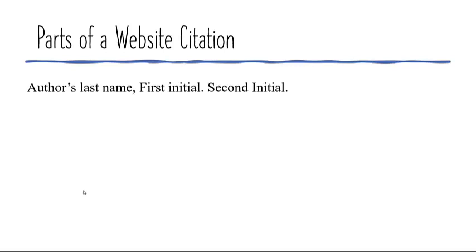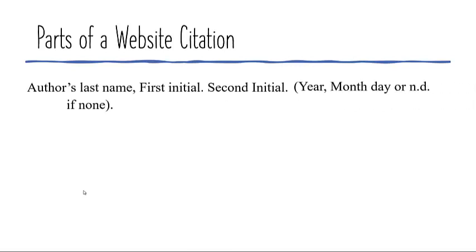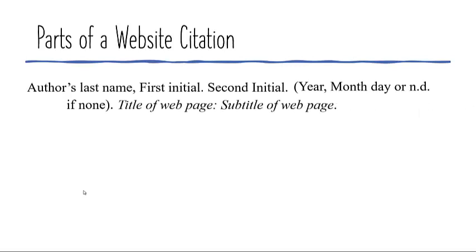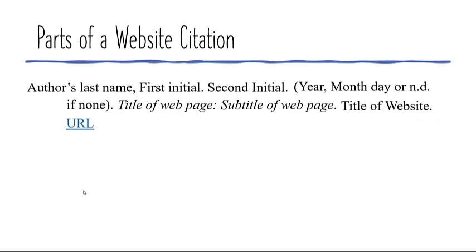The second element of the citation is the date of publication. That is followed by the title and subtitle of the webpage, the title of the website, and the URL. Note that the URL is a hyperlink and there is no period at the end of it.